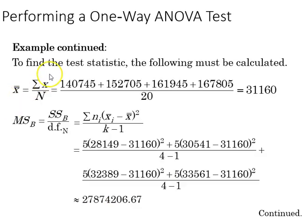We then find our test statistic using our equation, and the following must be calculated. The grand mean has to be found, and that is 31,160, and the mean square between with degrees of freedom N. Here is the equation for that. There's our result.